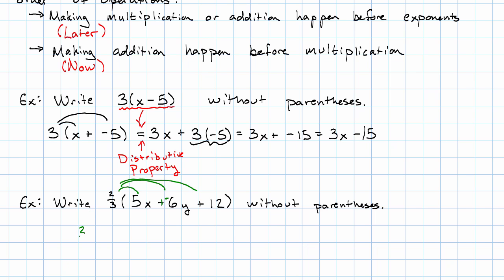So, we'll have 2 thirds times 5x. And the associative property will let us do this multiplication first. Plus, 2 thirds times negative 6y. Again, we can do this multiplication first because of the associative property, plus 2 thirds times 12. Now, we just do all the multiplication of numbers. You can use your calculator for this if you like. We have 10 thirds x minus 4y plus 8.